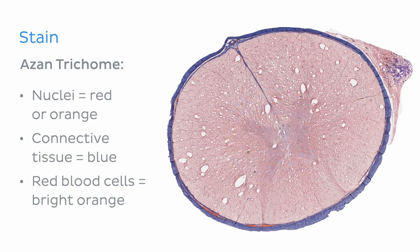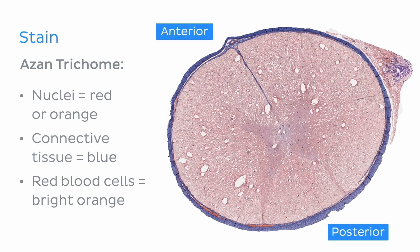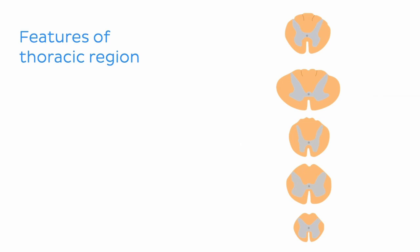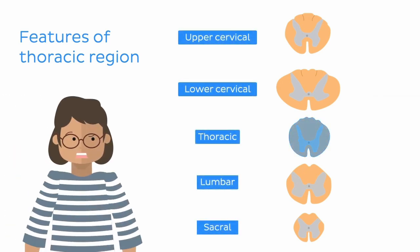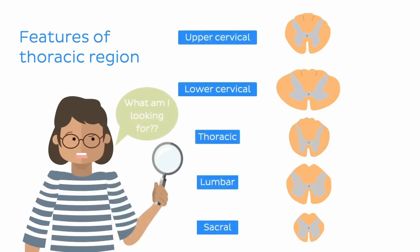The posterior aspect of the spinal cord is towards the bottom of the image here, and the anterior aspect is towards the top. The section we are looking at is from the thoracic region. But rather than just telling you that, let's figure out what features you should look out for to be able to identify it for yourself.